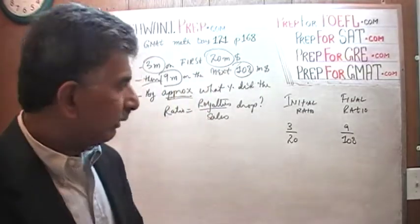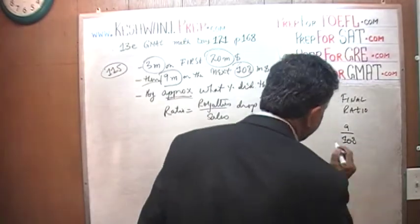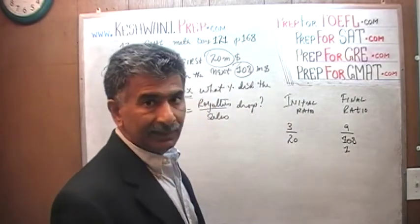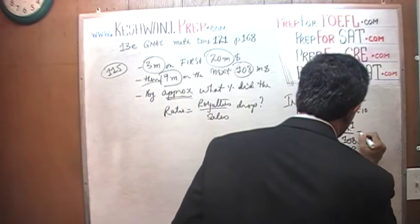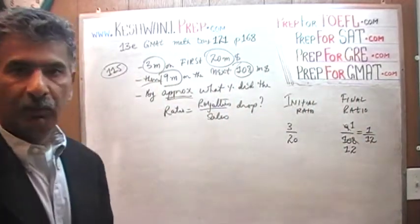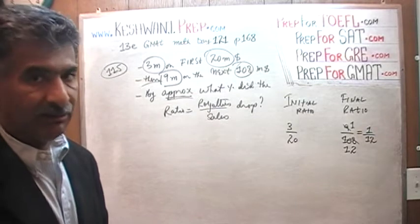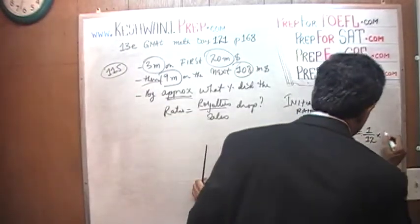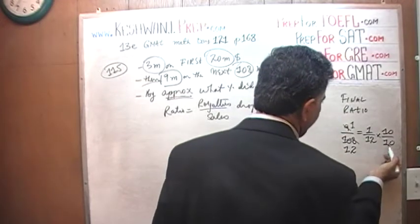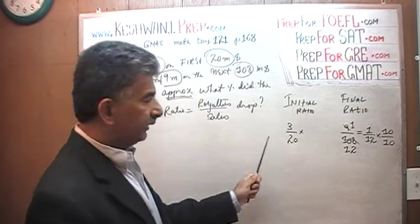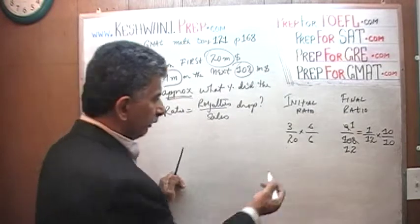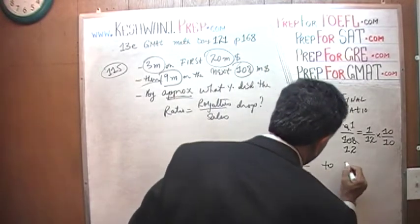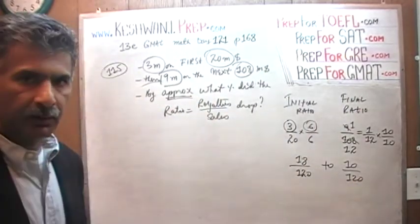How can we make the denominator the same? First, let's reduce 9/108. How many 9s in 108? 9 goes into 10 once with remainder 1, which joins the 8 to make 18; 9 goes into 18 twice. So 9/108 reduces to 1/12. Now it's much easier to find a common denominator. Let's multiply 1/12 top and bottom by 10, giving us 10/120. To convert 3/20 to a denominator of 120, multiply by 6: 3×6=18 and 20×6=120. So we go from 18/120 to 10/120.